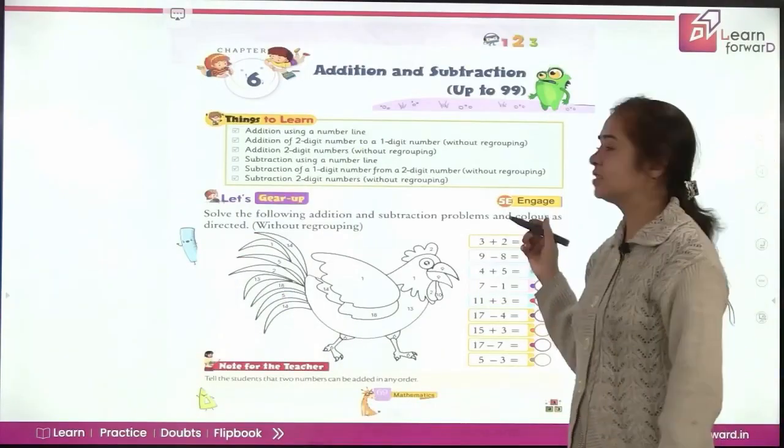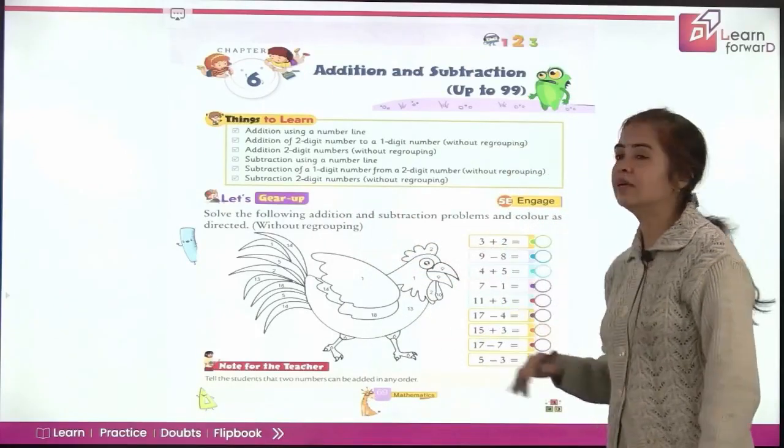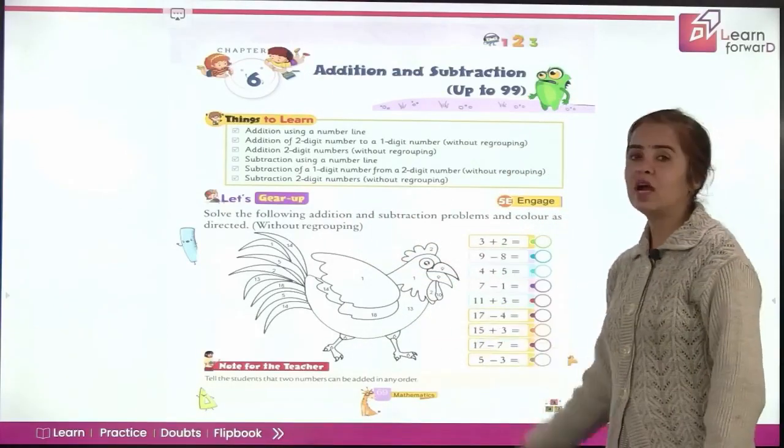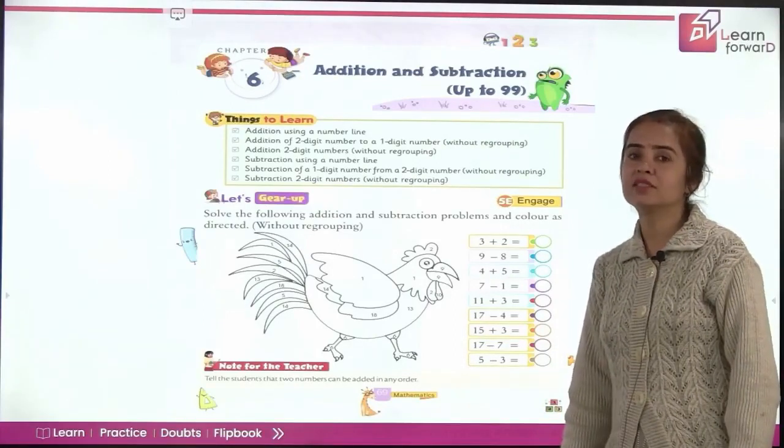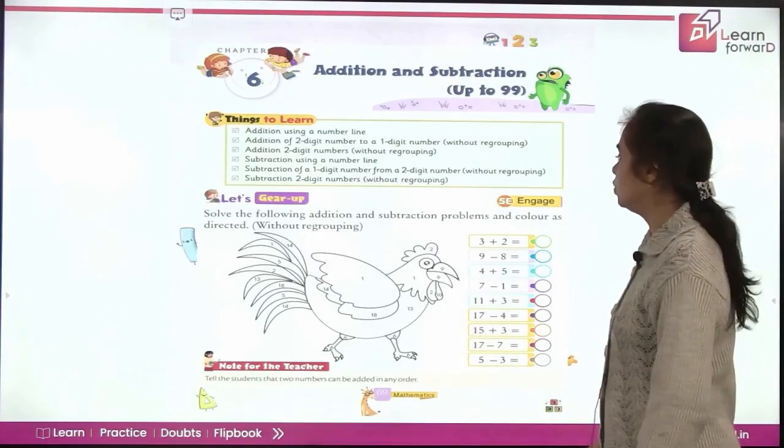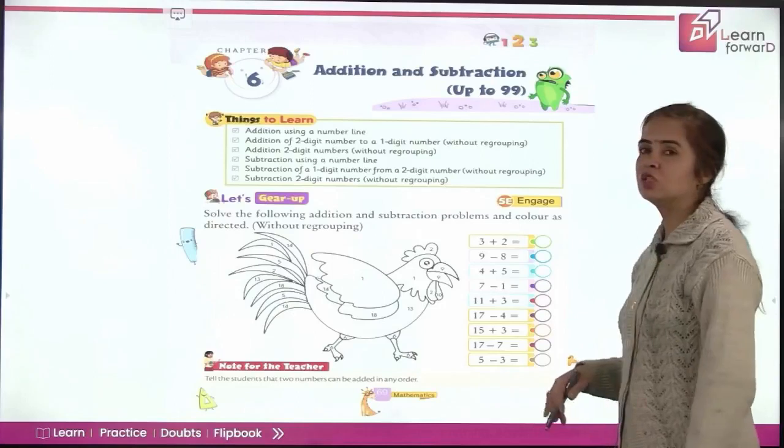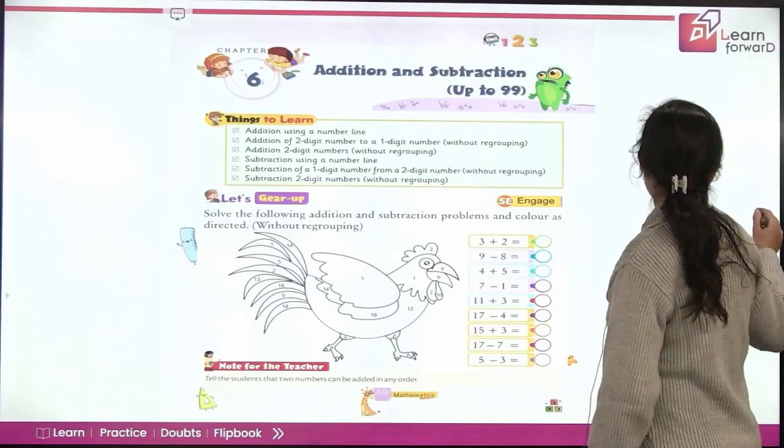We have already learned numbers up to 100 in the previous session. So today we will be having fun with those numbers and we will be adding and subtracting. So this is chapter 6 of your book in which we will be learning addition and subtraction of numbers up to 99. Are you ready? So let's get started.